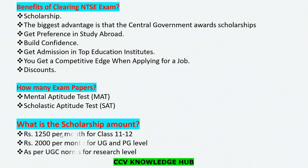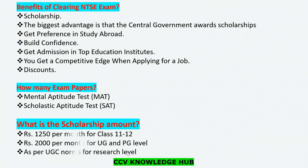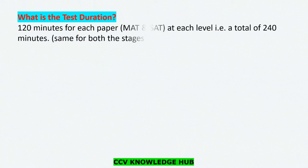The scholarship amount is 1,250 rupees per month for 11th and 12th standard, and 2,000 rupees per month for UG and PG level. For research level, as per UGC norms, the amount will be decided by the universities.